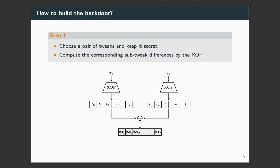Now, I will explain how to build the backdoor. Firstly, we should choose a pair of tweaks and kept it secret. And this is a malicious tweak pair. Next, for both of the tweaks, compute its sub-tweaks by choosing XOF, and then simply XOR them to obtain the sub-tweak differences.